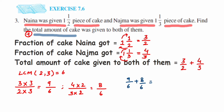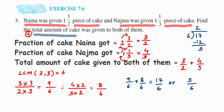Now we have nine upon six plus eight upon six. Since they are like fractions, we just add the numerators: nine plus eight is seventeen, and the denominator stays the same, so the answer is seventeen upon six. This is an improper fraction. To convert it to a mixed fraction, we divide: six twos are twelve, remainder five. So the mixed fraction is two and five upon six.